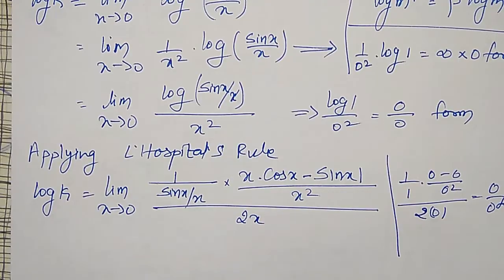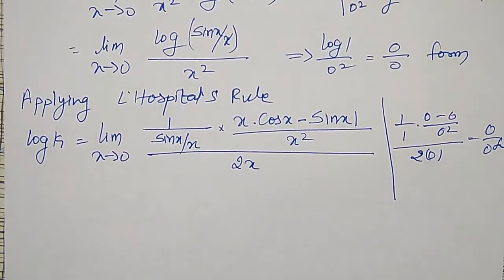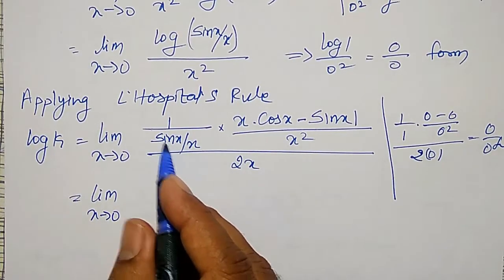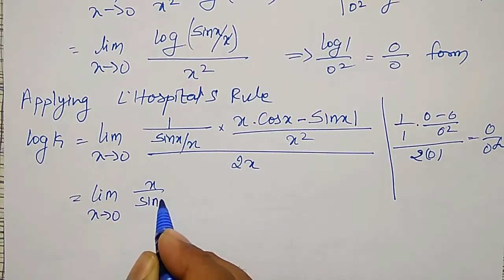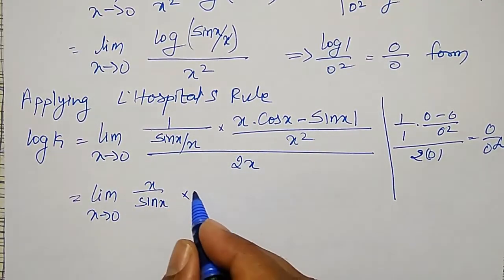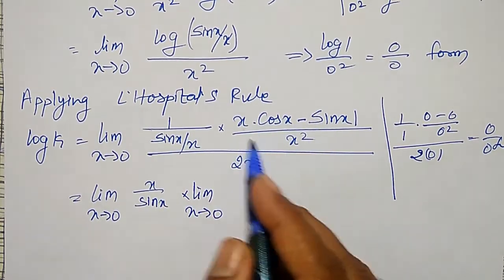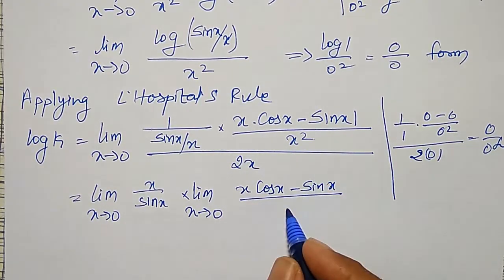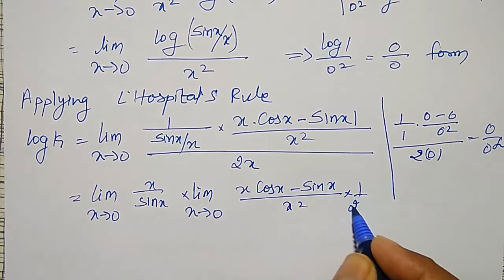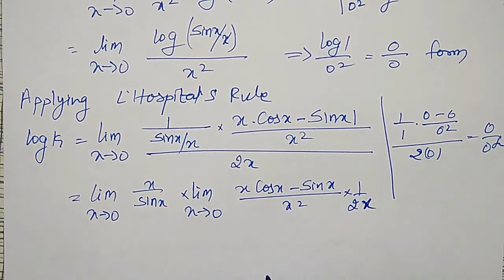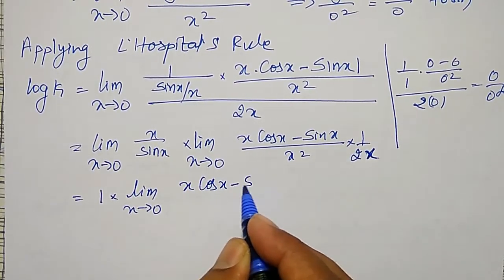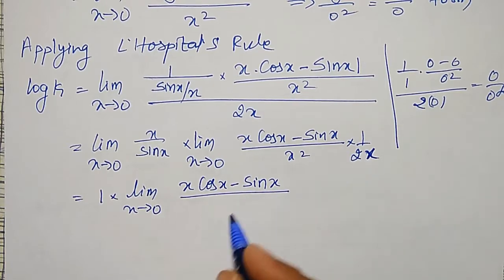Applying L'Hôpital's rule again would be lengthy, so I separate the terms. I write this as limit as x tends to zero of (x / sin x), times limit as x tends to zero of (x·cos x − sin x) divided by x², times (1 / 2x). Since the limit of (x / sin x) as x tends to zero equals 1, I'm left with limit as x tends to zero of (x·cos x − sin x) divided by 2x³.